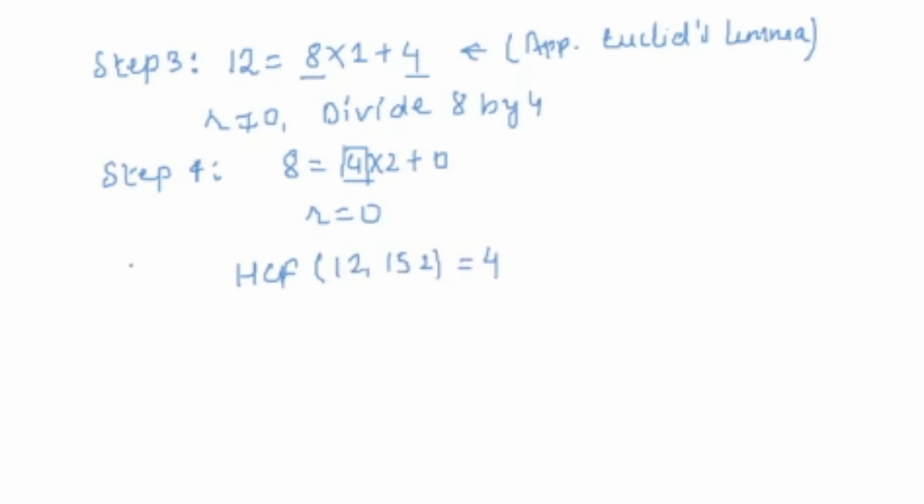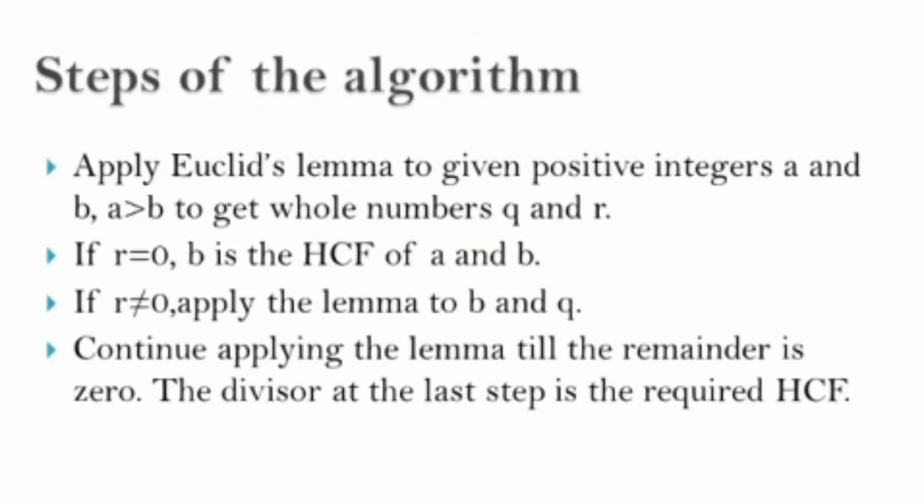So HCF of 12 and 152 is 4 and hence the solution. Now you can do any number of questions with the help of Euclid's algorithm. Let us just quickly understand what the algorithm says. The very first step is I have to apply Euclid's lemma on the given positive integers a and b where I have to compare them and divide, so I'll get whole numbers q and r.